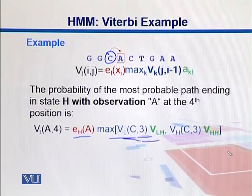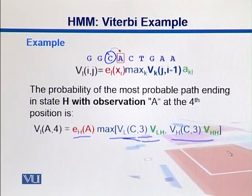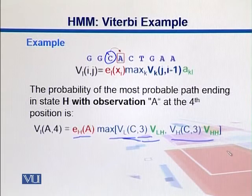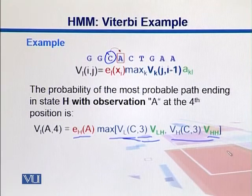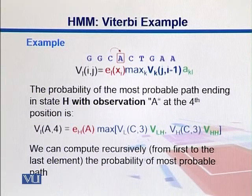Multiply both of them to get the probability when this C was in state H. That's VH(C,3). Since the symbol at position 4 is in H state, we multiply with the probability of moving from H to H or staying in the same state. We pick whichever gives us the maximum. We can compute recursively from first to last element the probability of the most probable path.